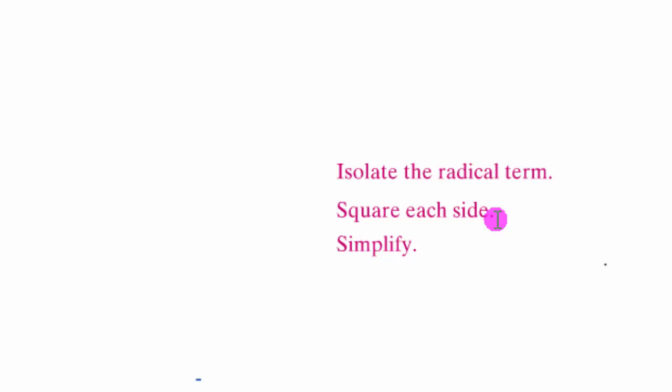Then we're going to simplify each of the sides and combine like terms. In this case, we are going to have another radical term still in the equation, so we're going to repeat the process. We're going to isolate the radical term again, square each side, collect terms, and solve for x.